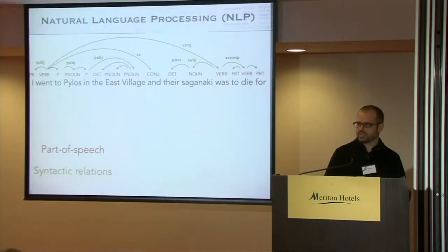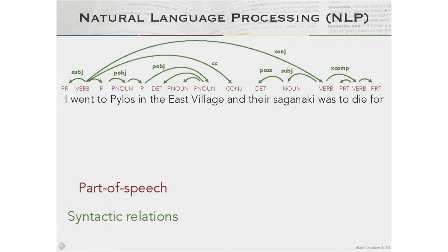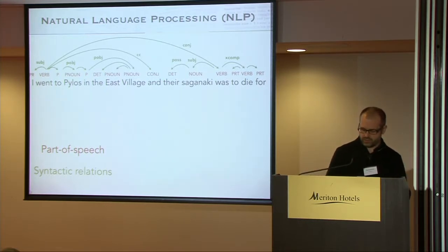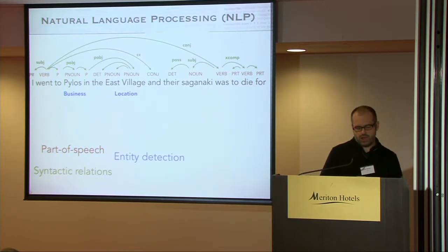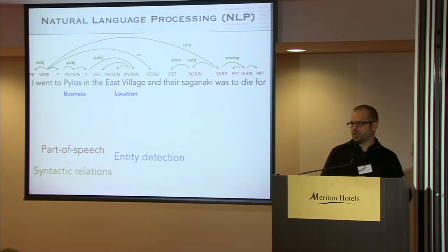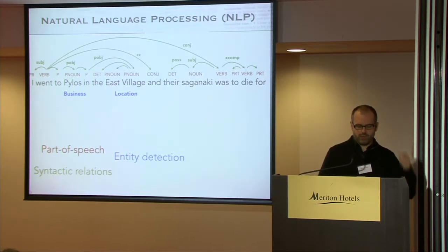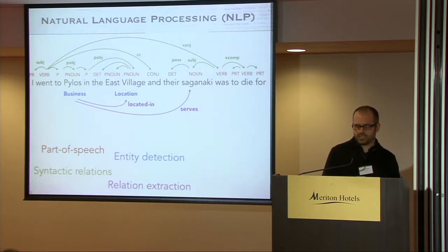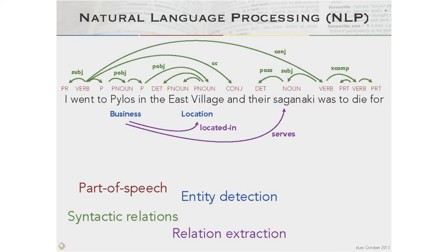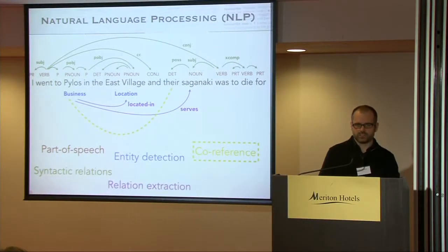Going deeper syntactically, we try to predict the syntactic relationships between words: the main verb, subclauses, subjects, objects, coordination phrases. On the surface semantic level, we try to identify real-world entities, assign a type, or resolve that entity in a database. So we know that this particular mention of Pilos refers to a canonical representation — a restaurant, not the island. We also want to learn relations between entities, and we need co-reference: knowing this pronoun's antecedent is Pilos, so we can determine that Saganaki is served by this restaurant.